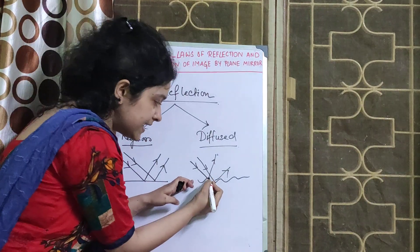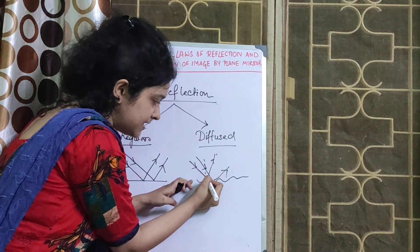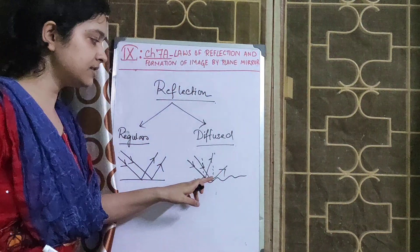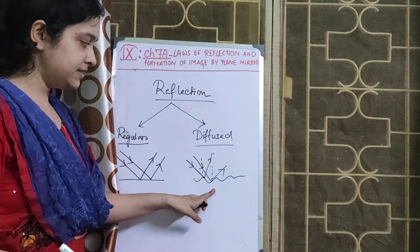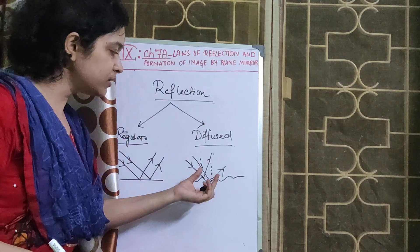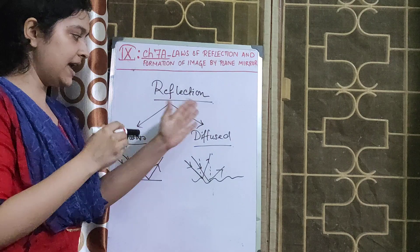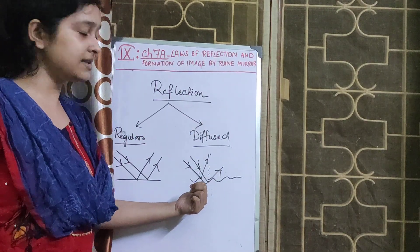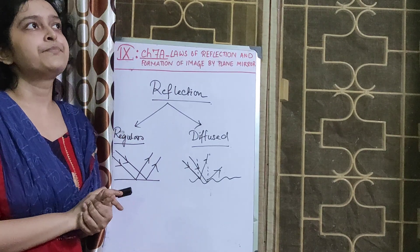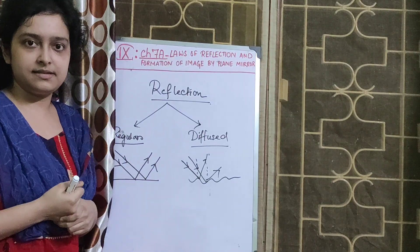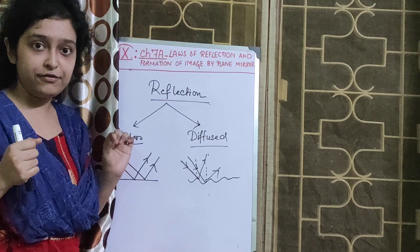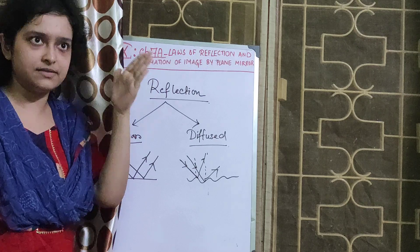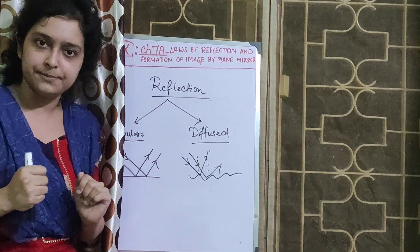In diffused reflection, for each point individually, laws of reflection are followed. Since the surface is uneven, they are scattered in every possible direction. This kind of reflection enables us to see different objects. For example, cinema screens are made a bit rough so that the light rays are scattered throughout everywhere — it is not that only those sitting in the front can see.